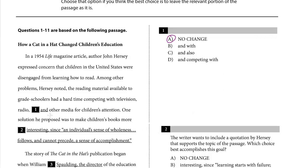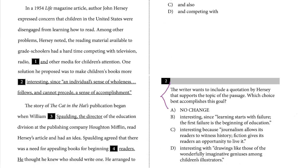One solution he proposed was to make children's books more interesting, since an individual's sense of wholeness follows and cannot precede a sense of accomplishment. Let's take a look at question two. Sometimes questions like number one don't have a call of the question — they're grammar-based. But here, when there is a call of the question, pay attention to what the question is asking for. The writer wants to include a quotation by Hersey that supports the topic of the passage — which choice best accomplishes this goal?